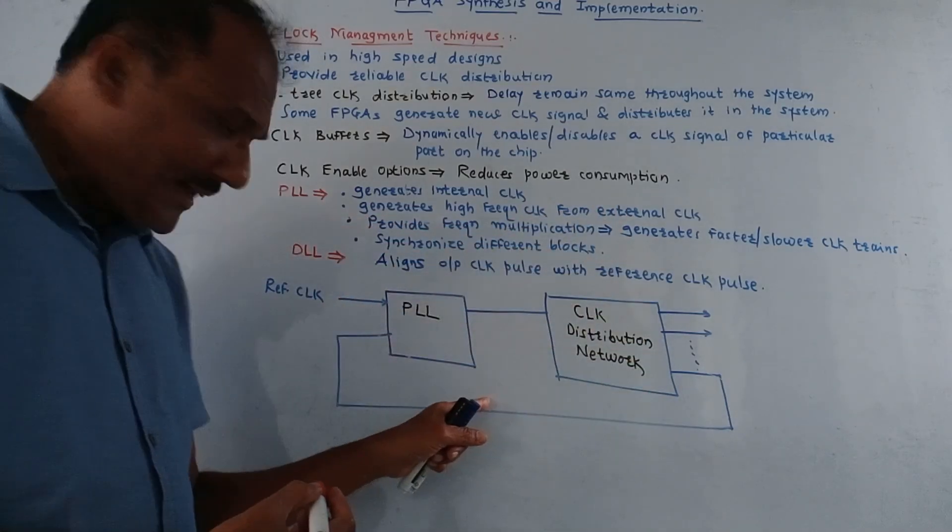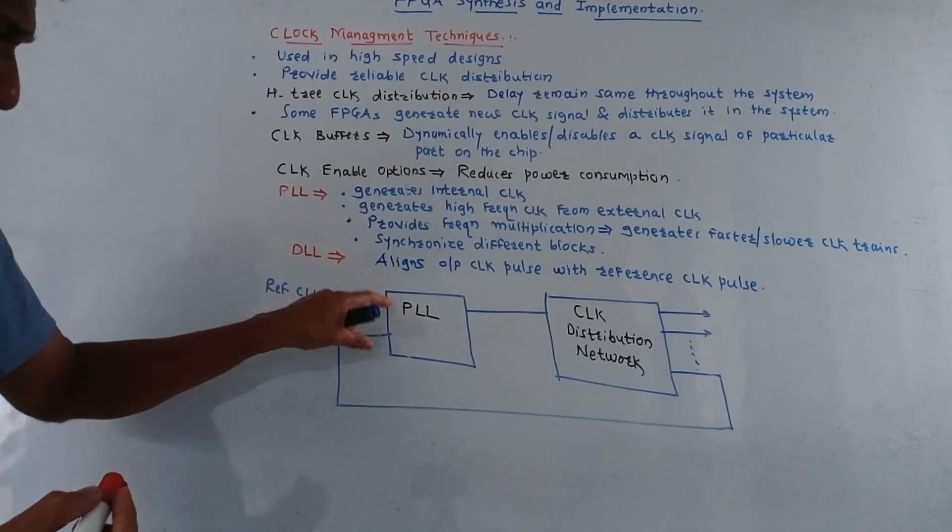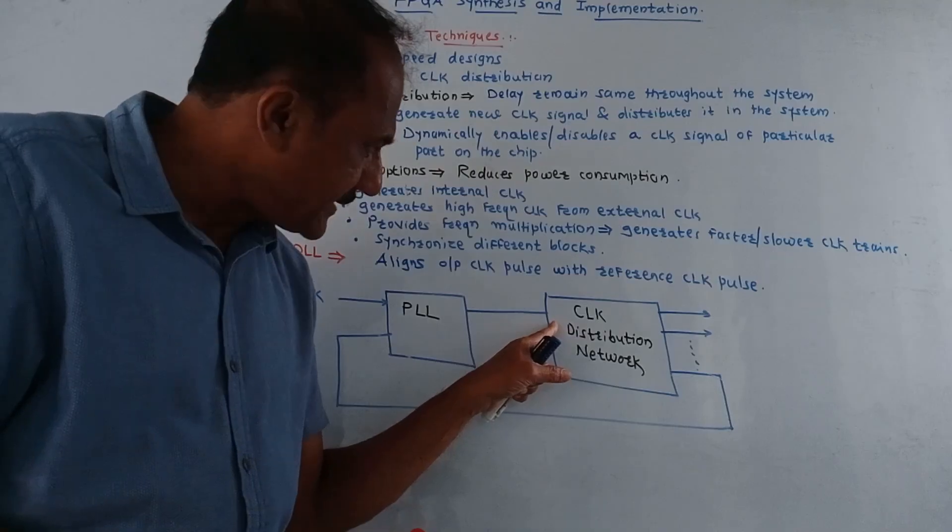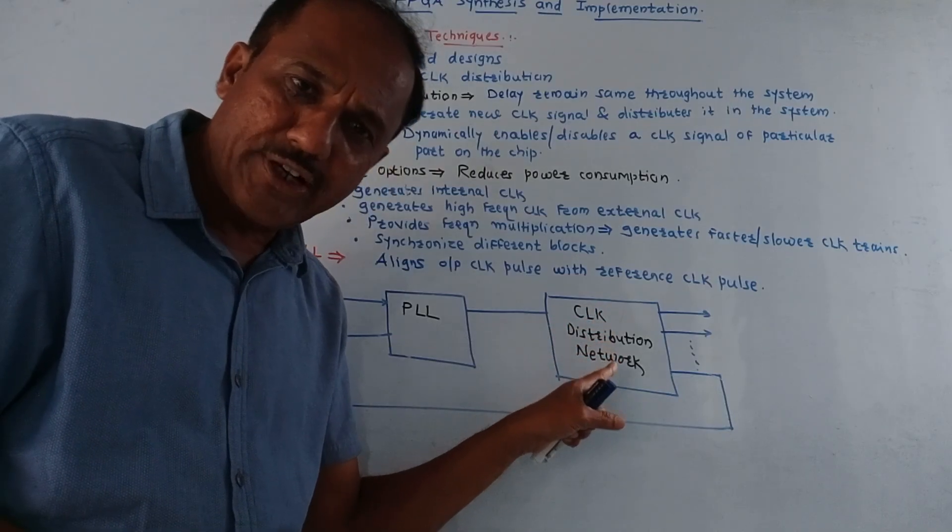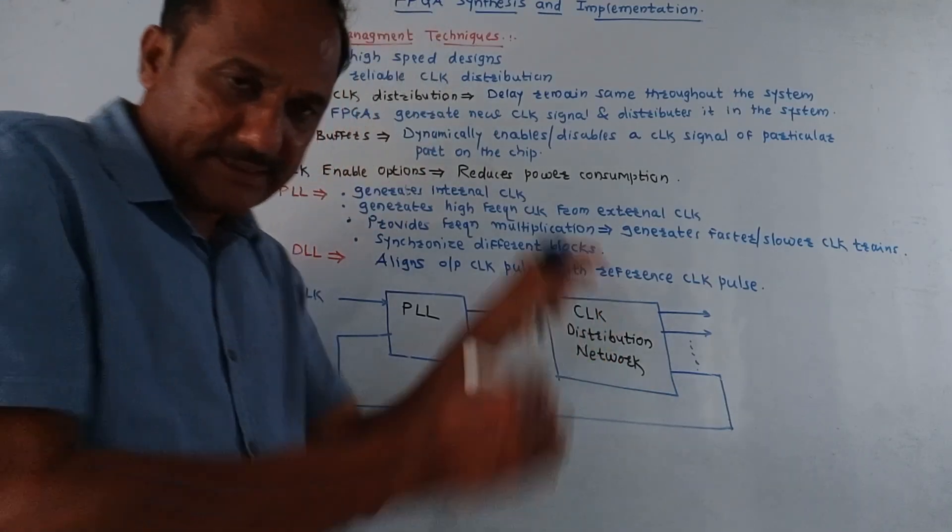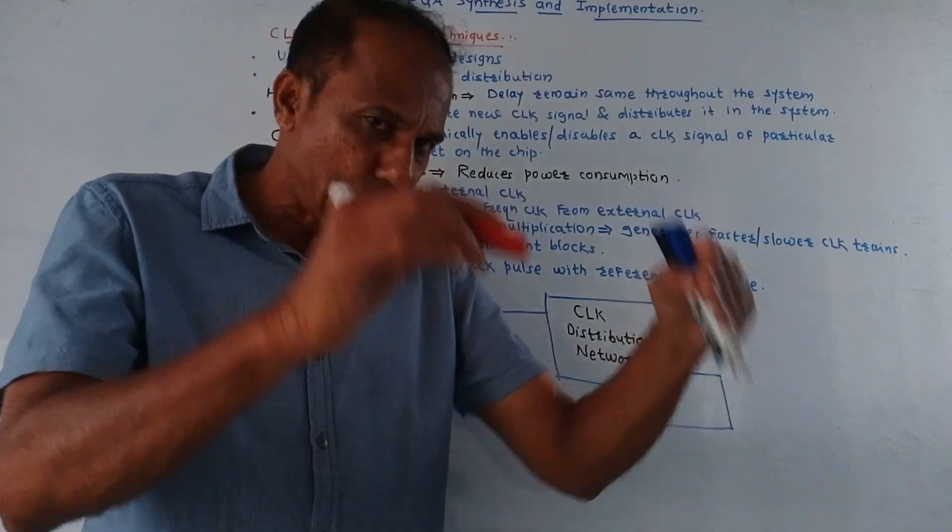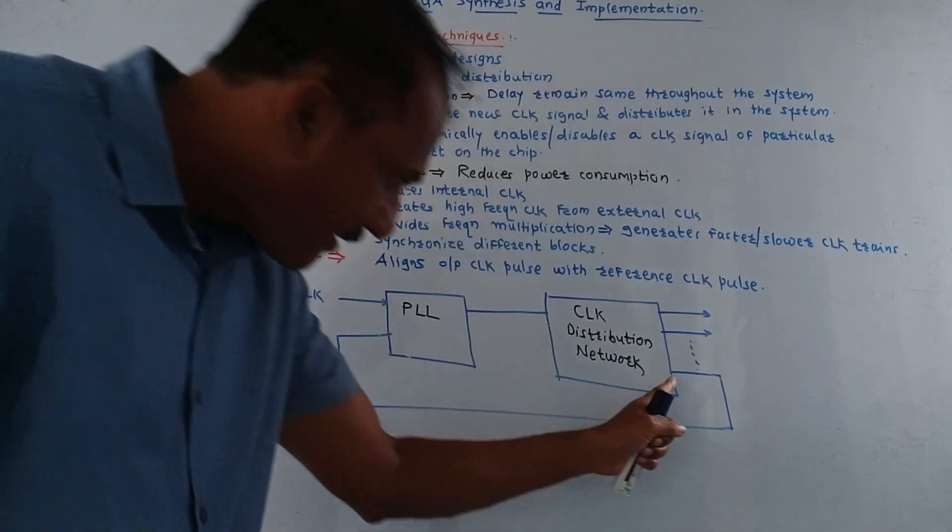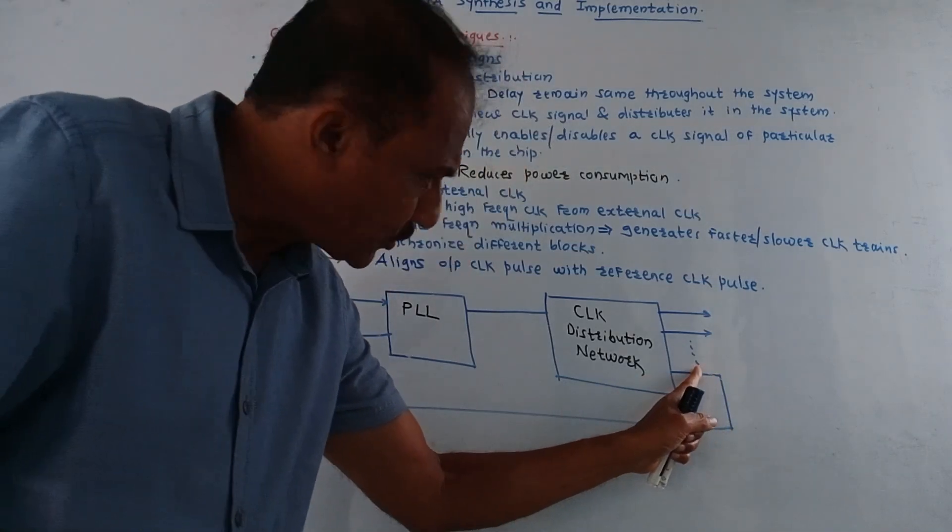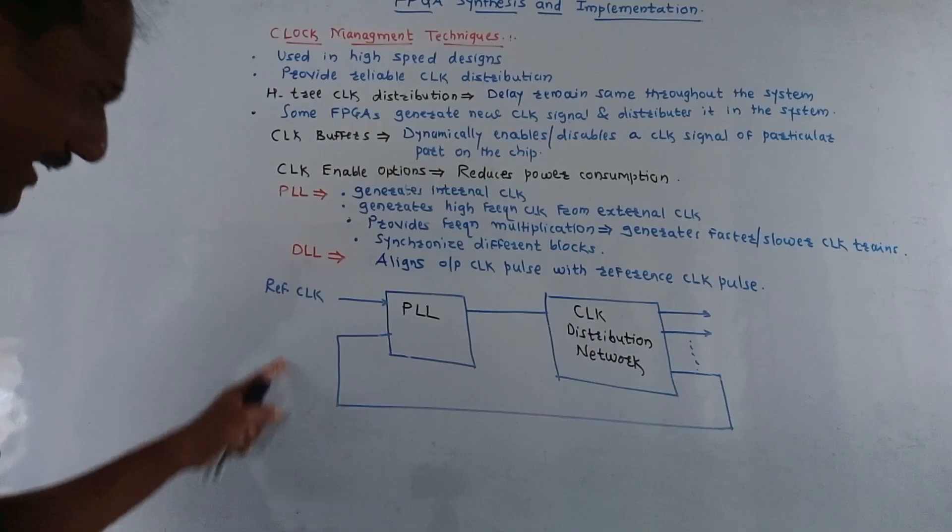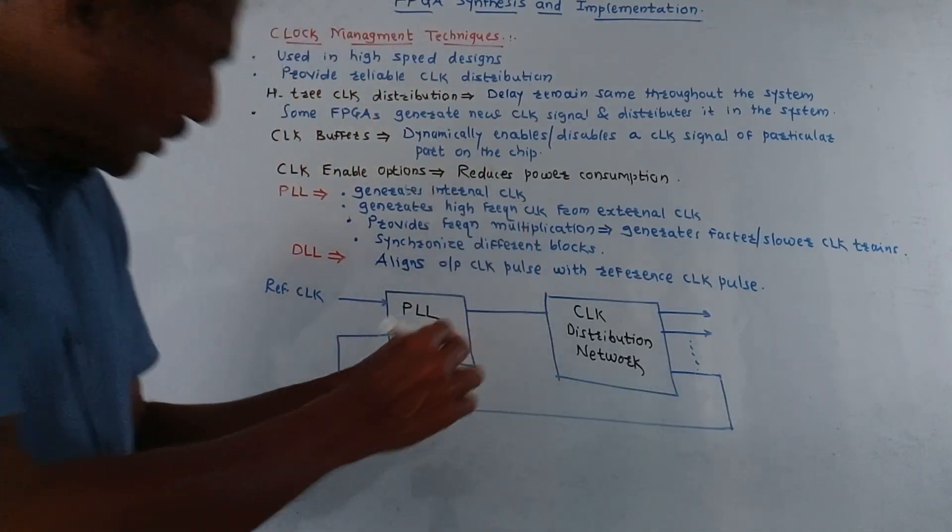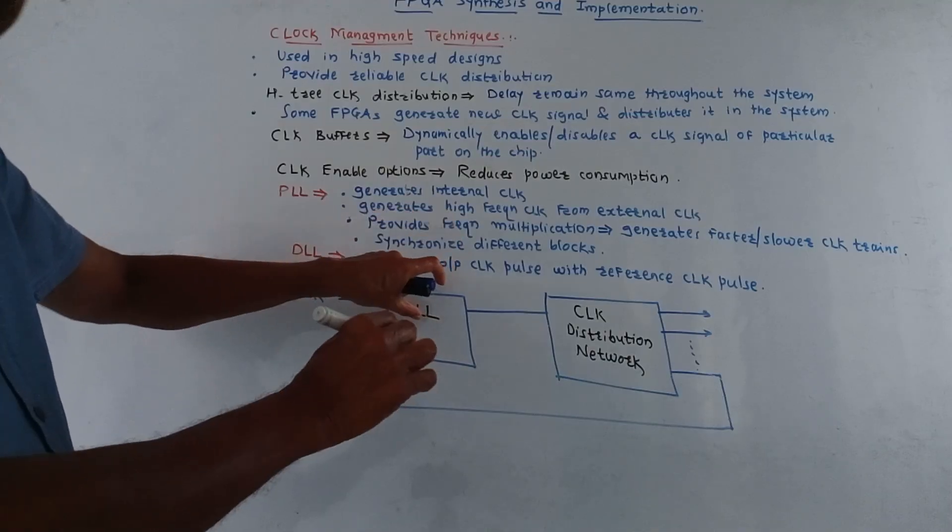As I said this is the block diagram. Reference clock is applied as one of the input to the PLL. Output of PLL is applied to the clock distribution network. As the name indicates this clock distribution network is used to distribute the clock signals to various parts of the circuit. One output of this clock distribution network is applied back to the input side. This signal, this frequency is used to lock the PLL device.